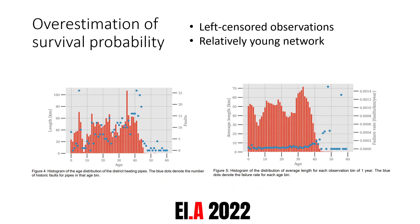We investigated reasons why the survival probability is overestimated and found two candidate explanations. The most likely is that the network is relatively young, with a vast majority of pipes being less than 40 years old, meaning the data does not represent all stages of the pipe's life cycle. It is commonly acknowledged that assets experience an increase in failure rate at the end of their life cycle, and this is not visible in the data. If it's not represented in the data, the model cannot learn it and will not know that at some point the failure rate increases, which means deaths are underestimated and survival probability is overestimated.